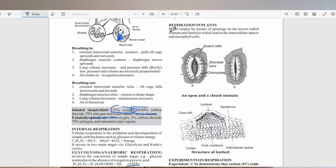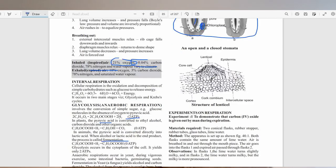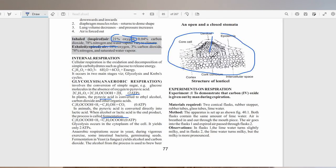Respiration in plants. Plants respire by means of openings on the leaves called stomata and lenticels, which lead to intercellular spaces and mesophyll cells. The stomata is surrounded by guard cells. When they become turgid, they open to allow air into the stomatal pore. The guard cells have chloroplasts. The lenticel is also an organ of gas exchange in plants.